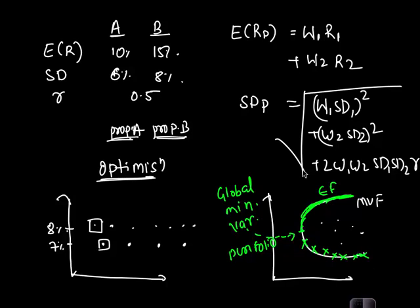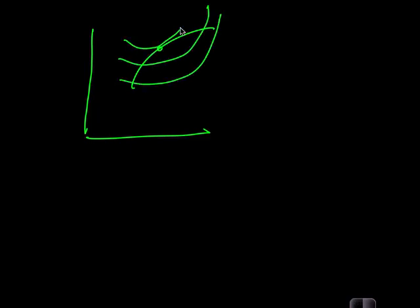Once that part was done, then one of these efficient portfolios was chosen to be the optimal portfolio. That selection was done based on the indifference curve of the individual investors. So the point of tangency between the indifference curve and the efficient frontier was considered to be the optimal portfolio for the client.